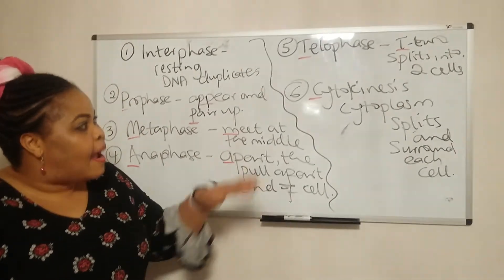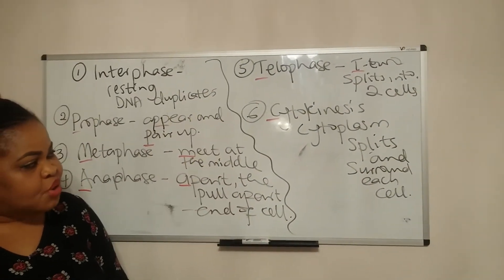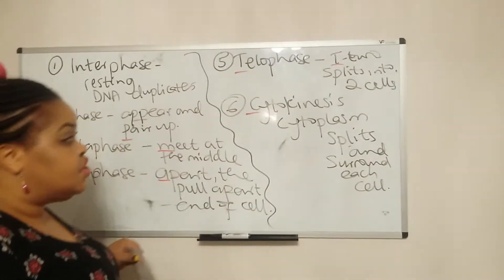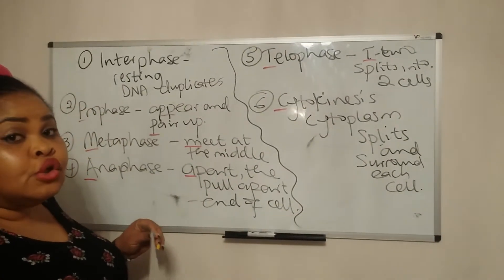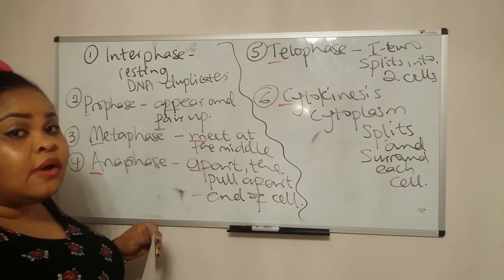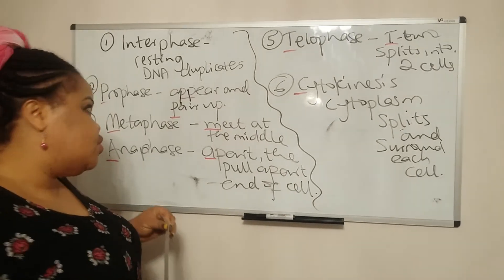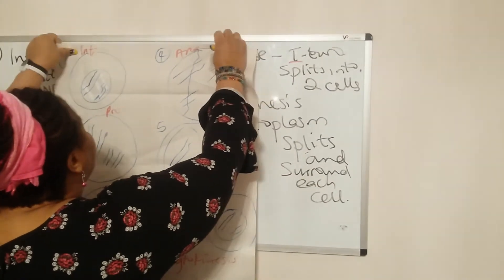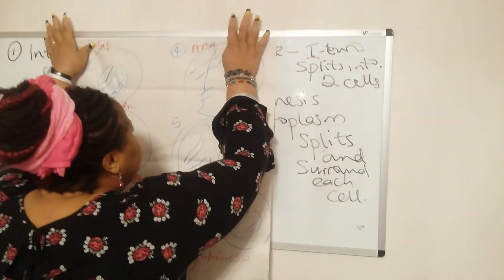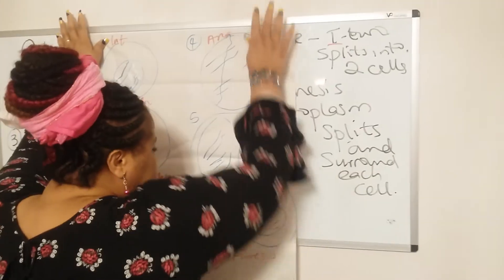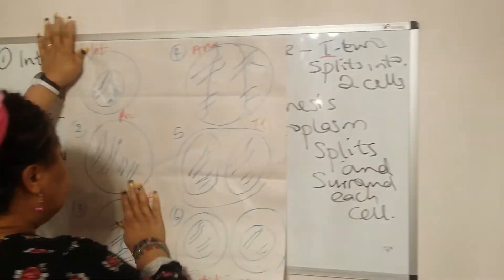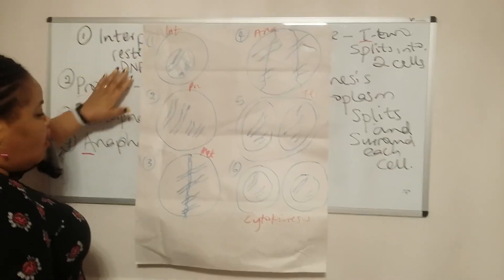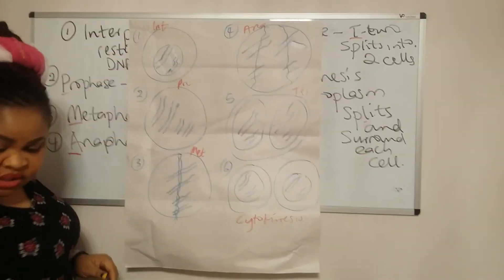Now that wraps up the stages of mitosis. It will split and wrap itself around each cell, and you have two daughter cells formed at the end of mitosis. I have just put this together for you to see the diagram of how the stages work. This is a really simplified version of mitosis.